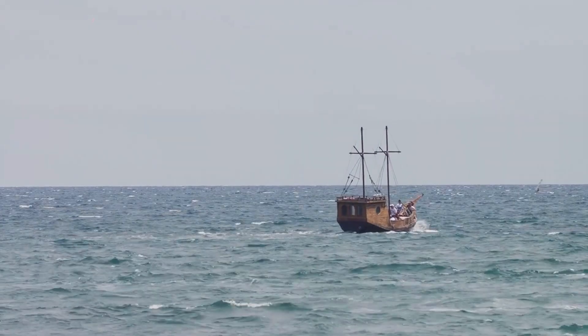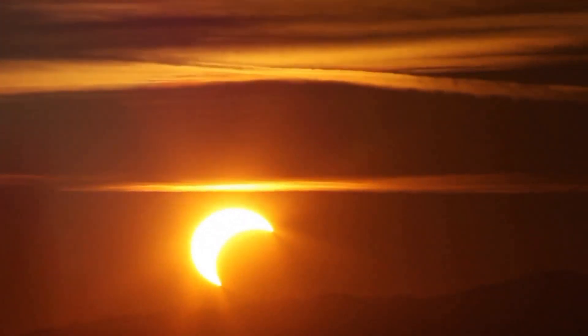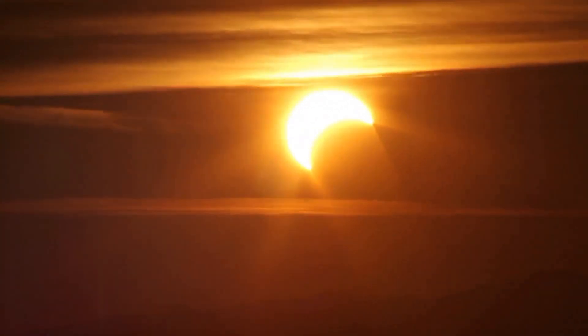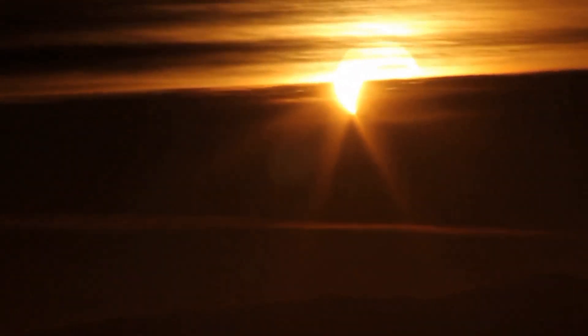Observations of lunar eclipses provide further evidence. As the Earth comes between the Sun and the Moon, it casts a shadow on the lunar surface. This shadow is always round, a clear indication of a spherical Earth.